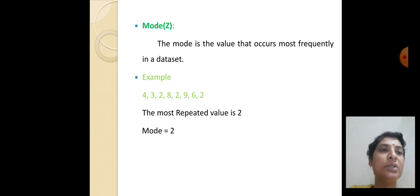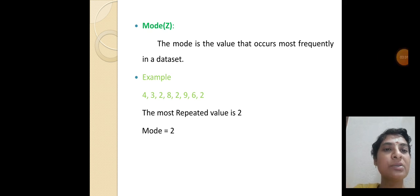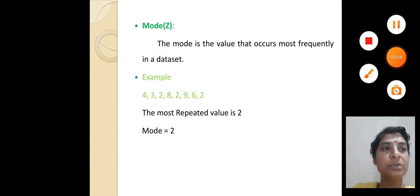Mode - the mode is the value that occurs most frequently in a data set. Example: in the data set, the most repeated value is 2, so mode equals 2. Thank you.